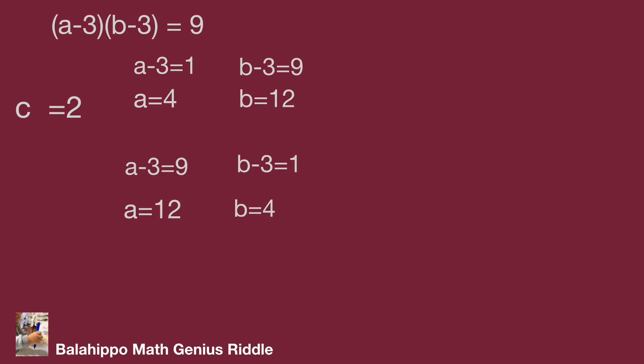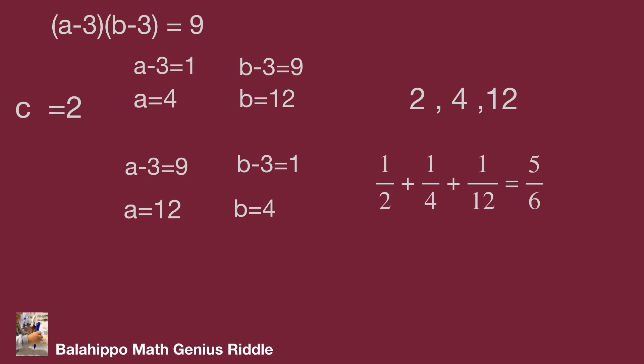Let's go back. The answer is: when C equals 2, A equals 4, B equals 12; or C equals 2, A equals 12, B equals 4. So our answer is A, B, C equals 2, 4, 12. Verification: 1 over 2 plus 1 over 4 plus 1 over 12 equals 5 over 6. That's the correct answer! Do you figure it out? Hope you enjoyed the video. Thank you.